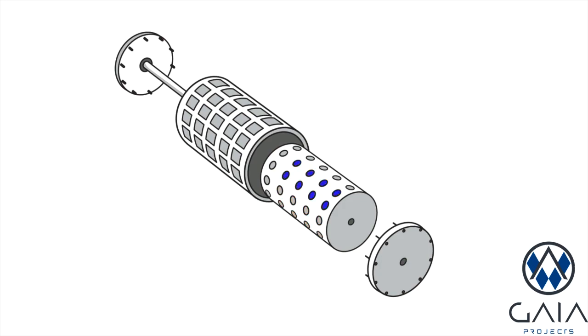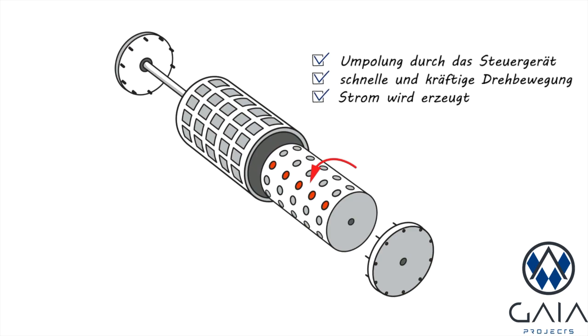The perfect timing of our control unit results in a permanent, powerful rotation. This process is controlled by the control unit and the rotation continues endlessly.